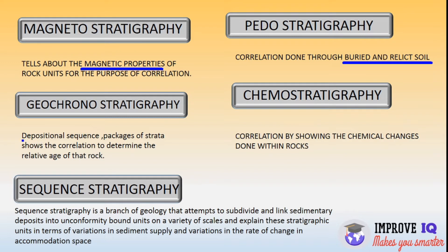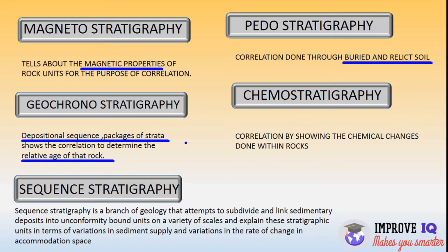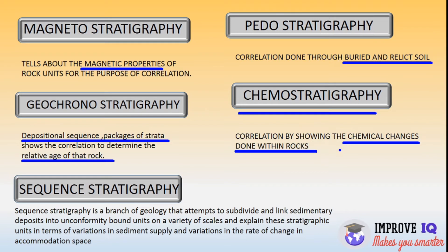Geochronostratigraphy has many similarities with chronostratigraphy, as both are related to the relative age of rock, but its units are different. It depicts depositional sequences and packages of strata, showing correlation to determine the age of that rock. Then chemostratigraphy: here correlation is done by looking at the chemical changes in rocks — the chemical changes are actually what is considered.